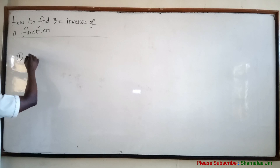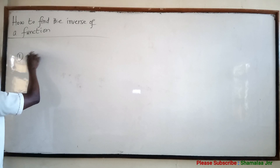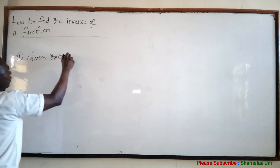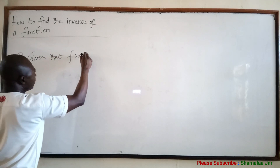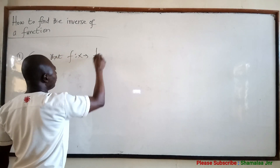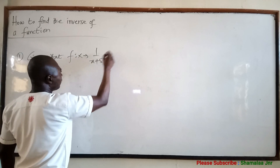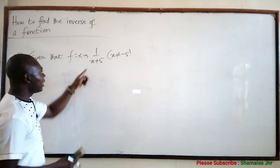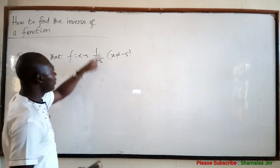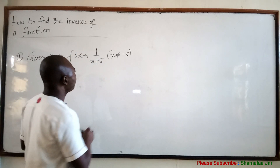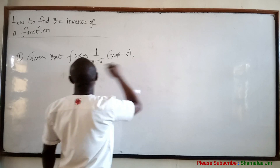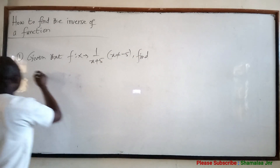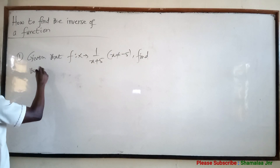Now, question number 1. Given that F of x maps onto 1 over x plus 5, where x is not equal to negative 5, because if x goes to negative 5, the denominator will be 0. Given this, find the inverse function.